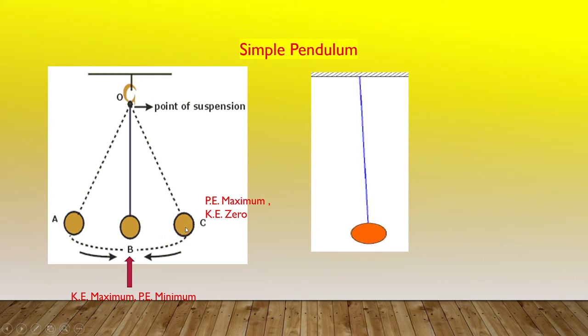At position C, the bob's potential energy becomes maximum and the kinetic energy is zero because its velocity becomes zero momentarily.